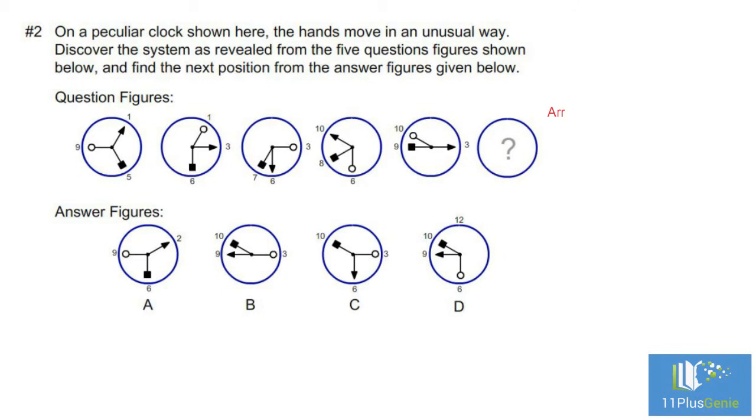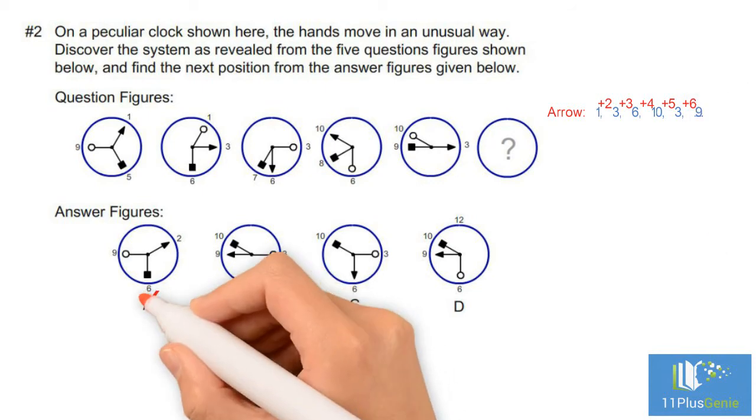The hand with the arrow: 1, 3, 6, 10. The pattern is +2, +3, +4, +5. For the next clock we must add six hours, which takes the arrow to 9. We can eliminate A and C.